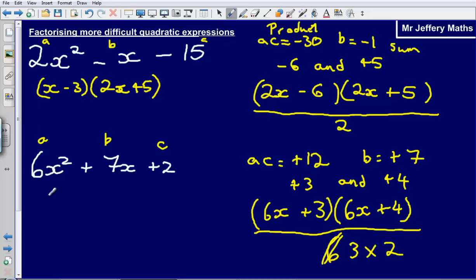So what I end up with now is I will end up with 2x plus 1. So I've just divided 6x plus 3 and I've divided that by 3. And then 6x plus 4 will be 3x plus 2. So I've just divided 6x plus 4, all of that divided by 2. And so now my final answer here will be 2x plus 1 in brackets and then 3x plus 2 in brackets. And that there is my final answer.